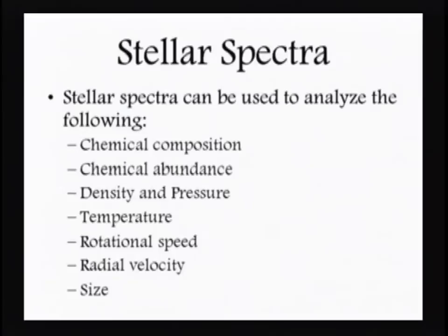From stellar spectra — which I alluded to last time — look at all the things you can determine: composition, abundance, pressure and density, temperature, rotational speed, radial velocity, and more. This is often the only way we have of finding out that information from the stars, so it's very important that we make these measurements.